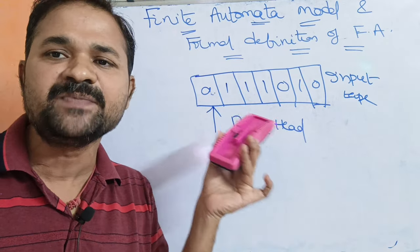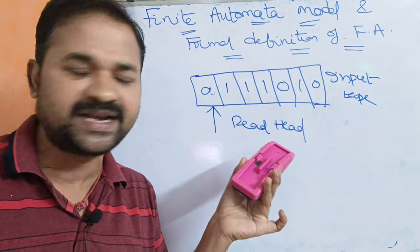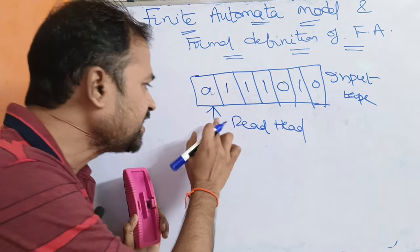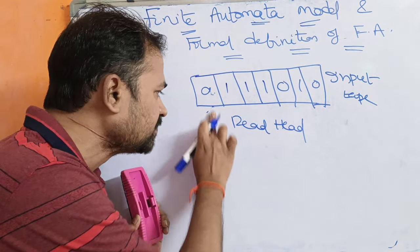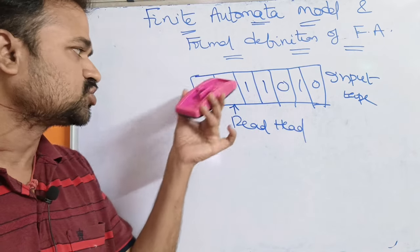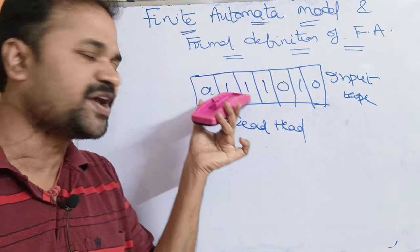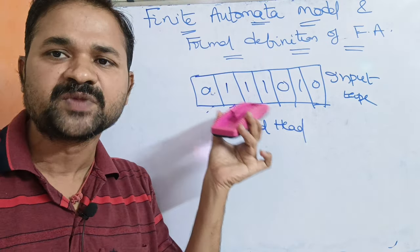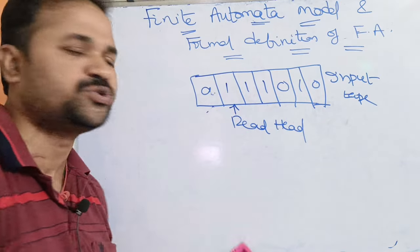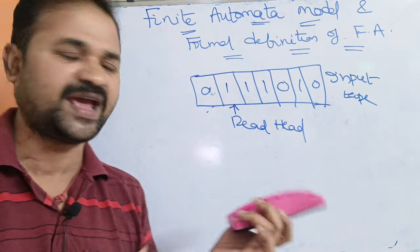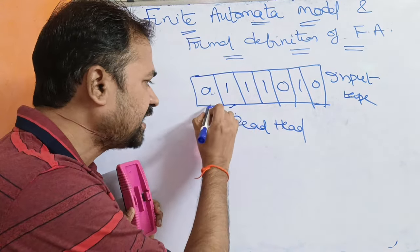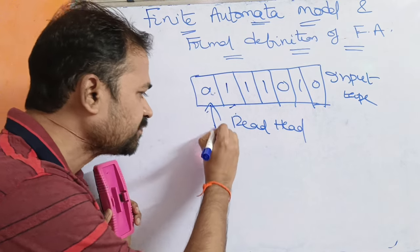We can move the read head only from left to right. After reading a symbol, the read head points to the next location. So now one will be read, and after that the read head moves one position to the right, and likewise. This is the second component, read head.